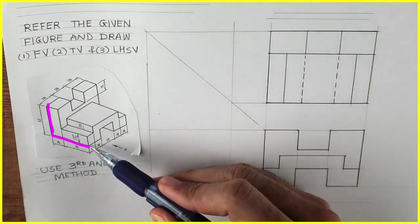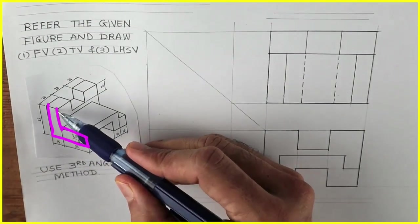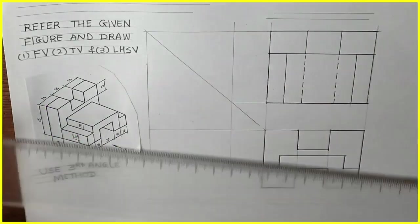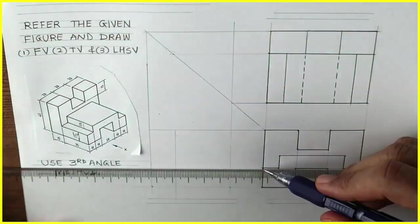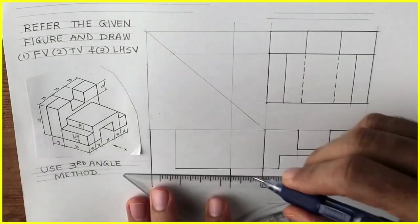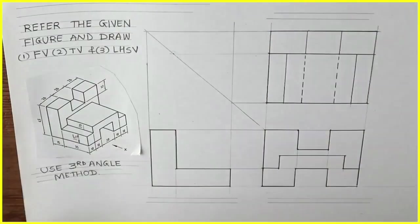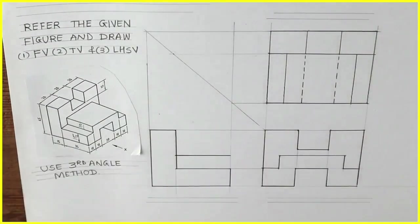If you see inside view you'll see this L shape, right? So first we will draw that L shape. We'll project from top view and front view. We'll get that L and we'll draw this rectangle also.